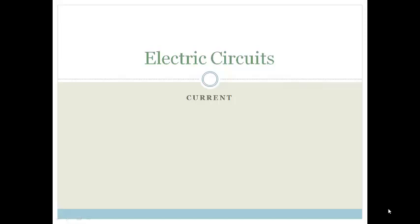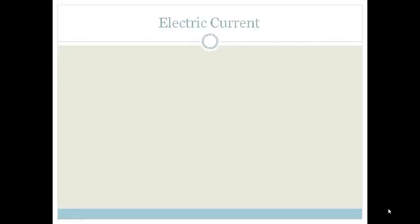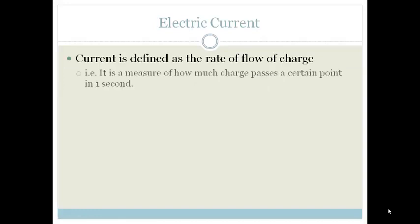Good day, Great Tent. In this lesson, we're learning about current. Current is defined as the rate of flow of charge. In other words, a measure of how much charge passes a certain point in one second.